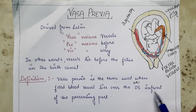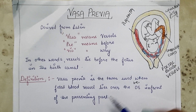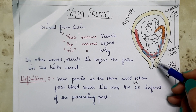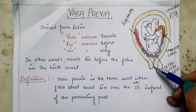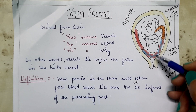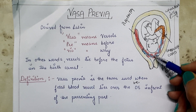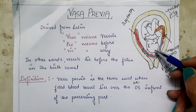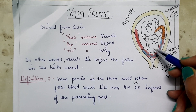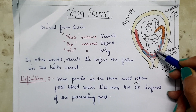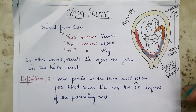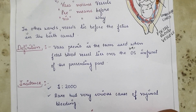The definition: Vasa Previa is the term used when the fetal blood vessels lie over the internal os of the cervix, in front of the presenting part. This is the internal os of the cervix and this is the external os of the cervix. The fetal blood vessels are present over the internal os, and here the presenting part is the head of the fetus.